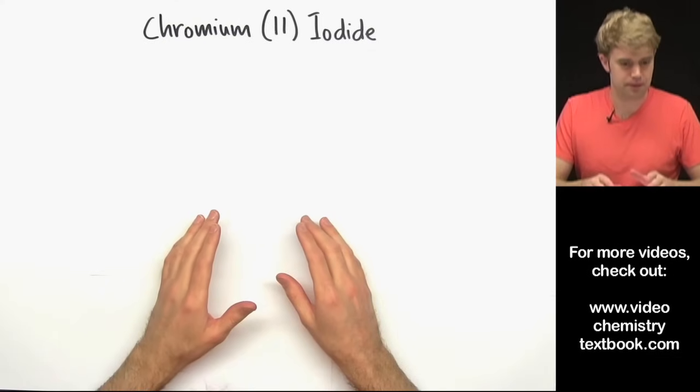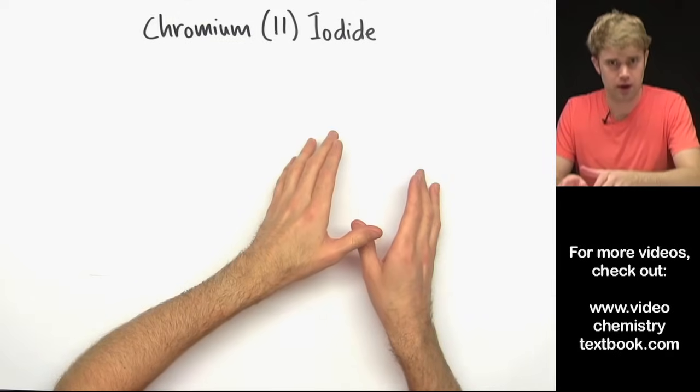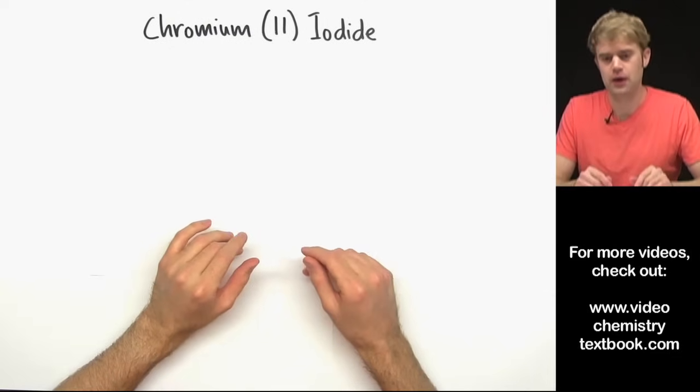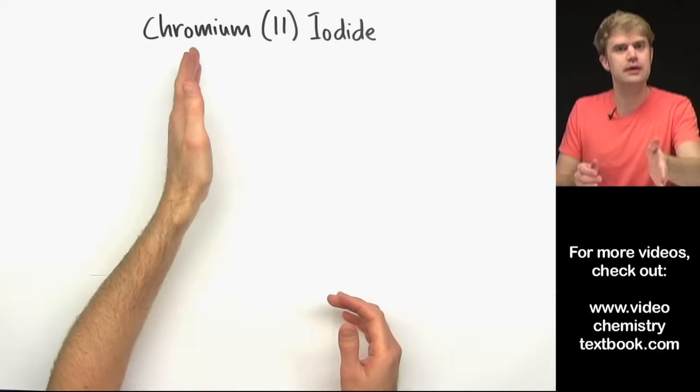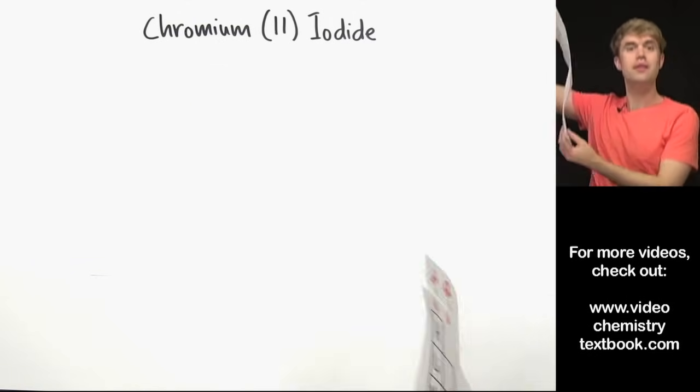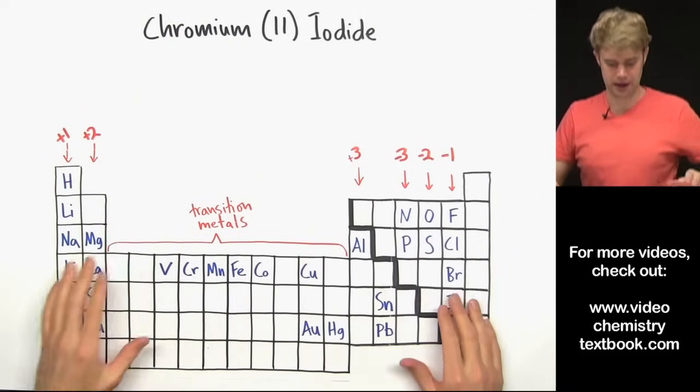Here's our first example, chromium-2-iodide. We want to write a formula for it. Now when we're writing ionic formulas, the first thing we want to do is find out the charges of the ions in the compound. And we often do that by looking at where they are on the periodic table. So here we have chromium and iodide.